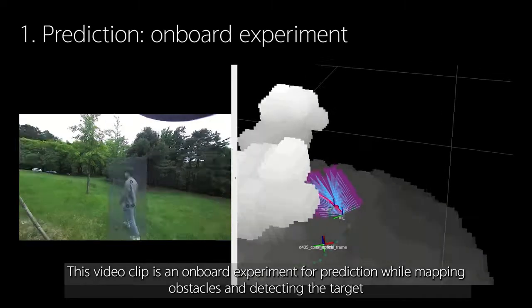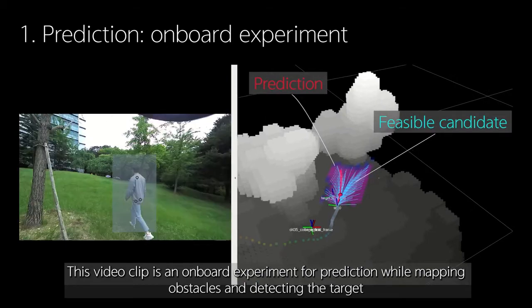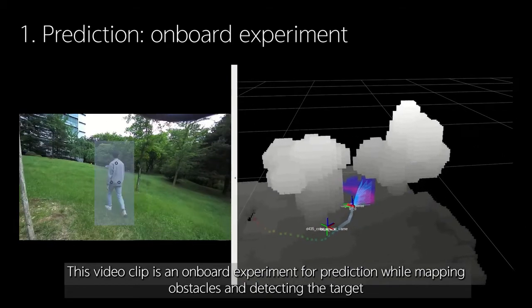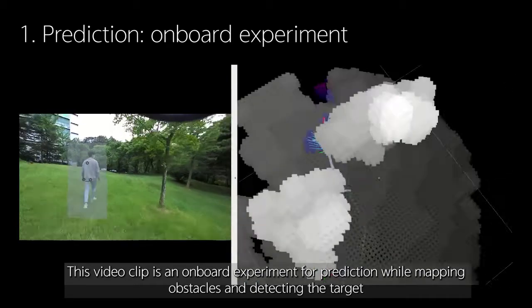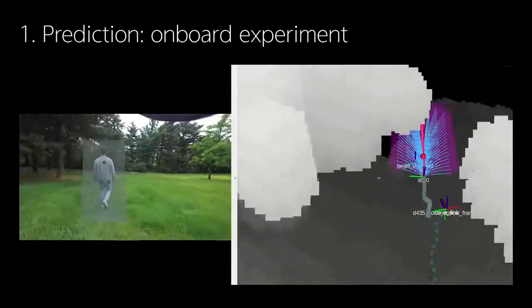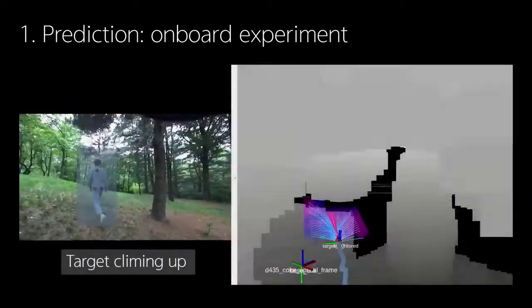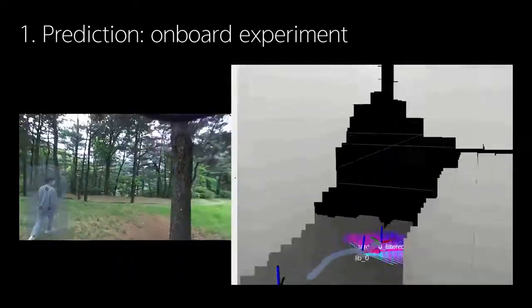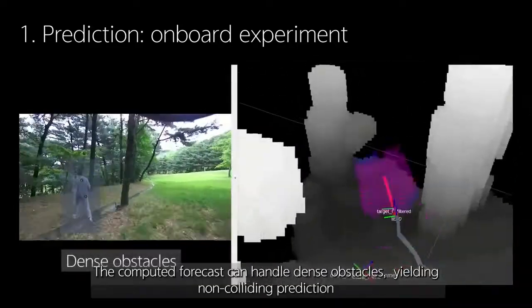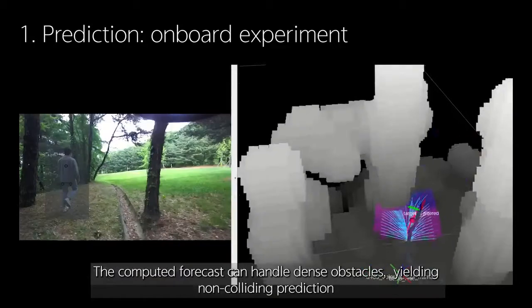This video clip is an onboard experiment for prediction while mapping obstacles and detecting the target. We can predict the target considering the slope of terrain. The computed forecast can handle dense obstacles, yielding non-colliding prediction.